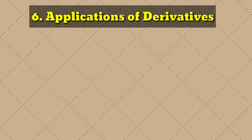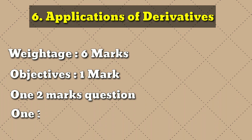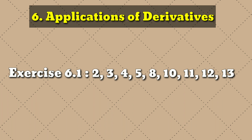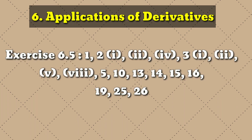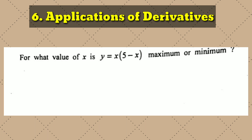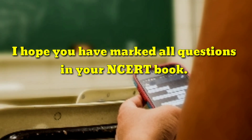Chapter 6, Applications of Derivatives — the total is 6 marks, with 1 objective, 2-mark and 3-mark questions. First, the important examples are shown — please mark them in the book. Now Exercise 6.1 important questions, then Exercise 6.3, and last Exercise 6.5 important questions. Please mark all the questions. In the last 3 years, examples have been frequently asked.